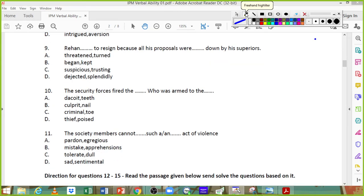Ninth one. Rehan dash to resign because all his proposals were dashed down by his superiors. So you don't begin to resign. You either resign or you don't resign. But the best option, Rehan threatened to resign because all his proposals were turned down by his superiors. This definitely makes sense. So ninth one, very easy, has to be one.